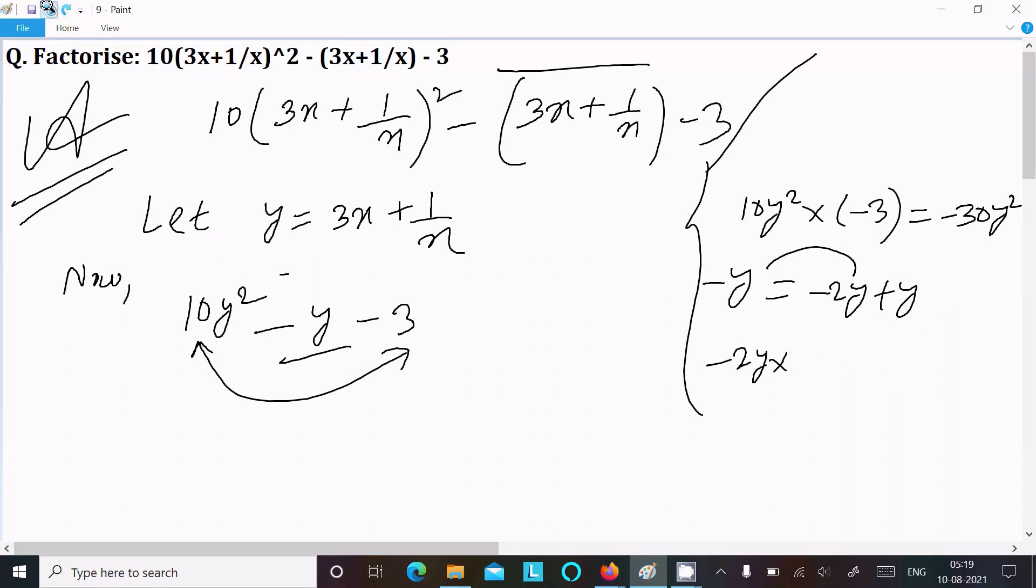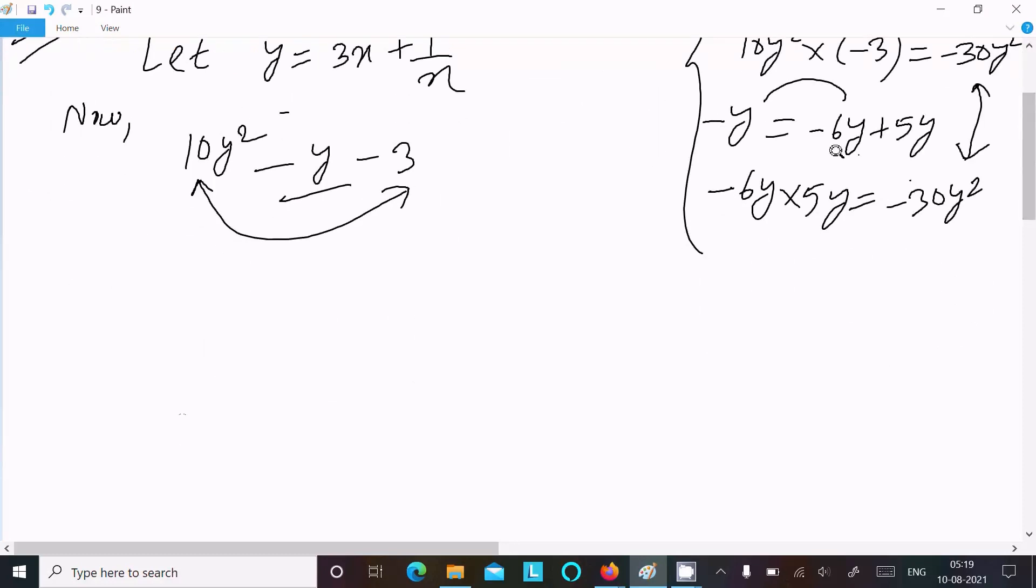Not equal, okay. So if that not equal we cannot take this combination. Now the next is: in place of y we can write minus 6y plus 5y. If I subtract, it equals minus y. And when I multiply minus 6y into 5y, it equals minus 30y². These twos same, equal.